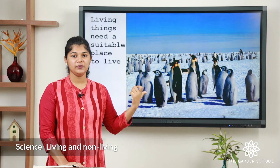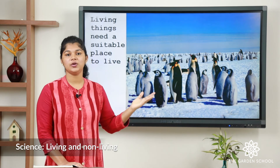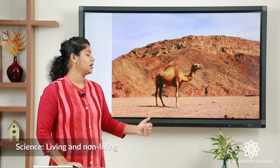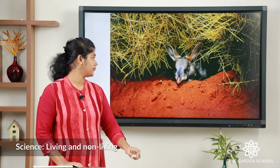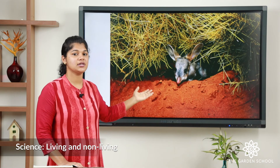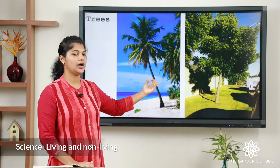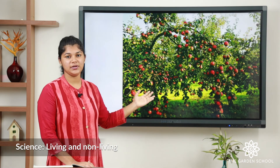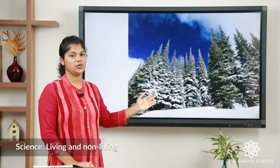The next characteristic of a living thing is that living things need a suitable place to live. For example, penguins — we cannot see them in our area because they live in colder regions. Camels live in desert areas. Elephants live in open grassland areas. Hares and rabbits live in burrows. For trees, coconut trees and neem trees grow in warmer regions, while apple trees and pine trees grow in colder regions.